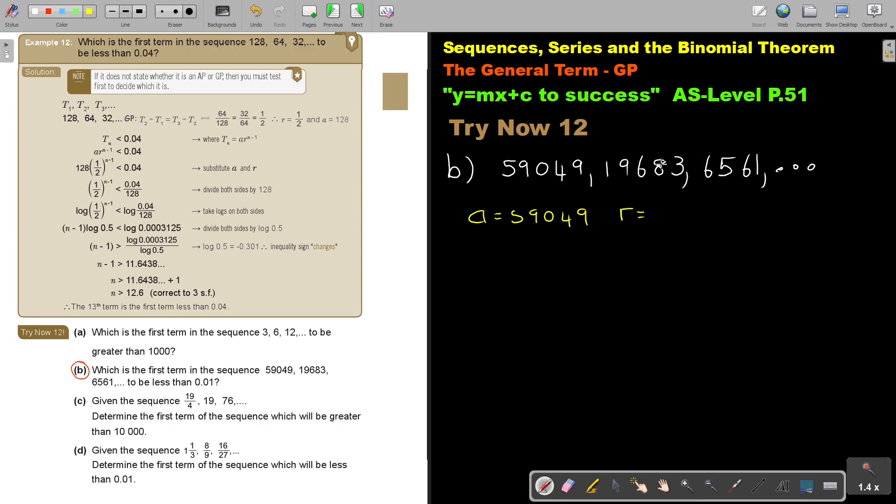Now you can test, actually. So divide, divide. It's the first test to see if it's a GP. But it's a GP because you will get a third and a third. So you will say T2 by T1 will be that 19683 divide 59049, and that will give you that third.